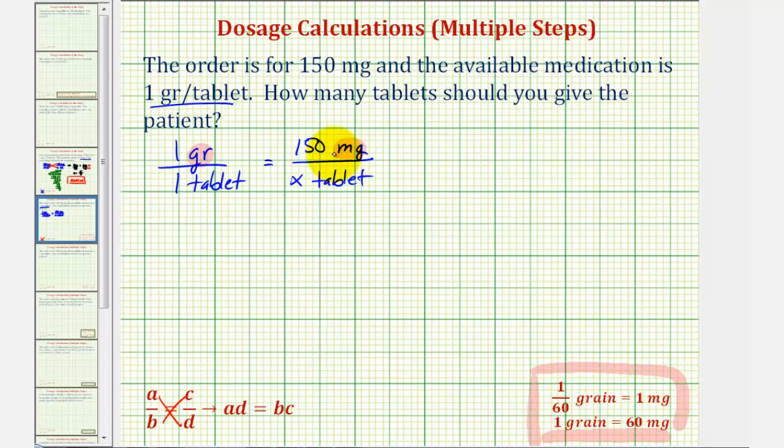Let's go ahead and convert 150 milligrams to grains. So we want to know 150 milligrams to an unknown number of grains would be equal to, and now for the second rate or ratio, we'll use one of these conversions here.